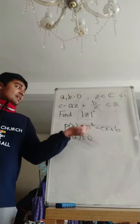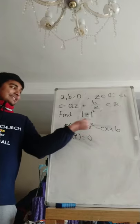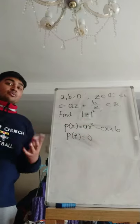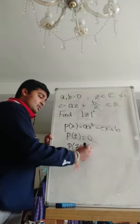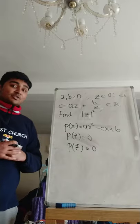But notice if we look at this, all the coefficients are real numbers a, c and b. So that means that the two roots are complex conjugates with one another. So we know that p of z bar is also zero. So the other root is the complex conjugate of z.